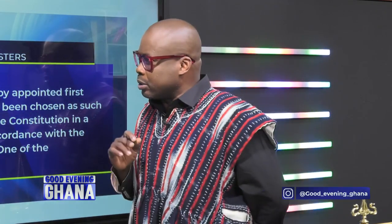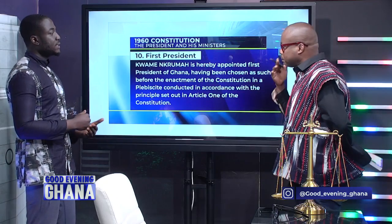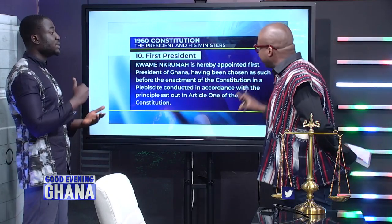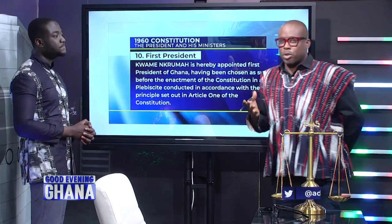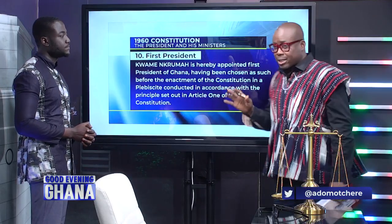How does the current Constitution describe the process by which a president becomes president? It's called a presidential election. Articles 63, Clauses 1 through 7, expressly state that there has to be a presidential election, requiring 50% of the votes plus one. So before you become president, there has to be a specifically organized presidential election to select the person who would govern the country for the next four years.